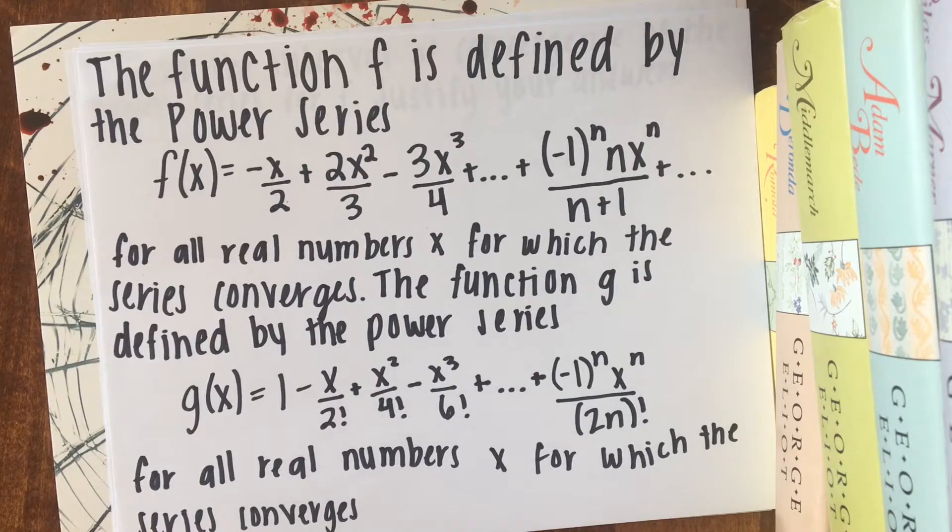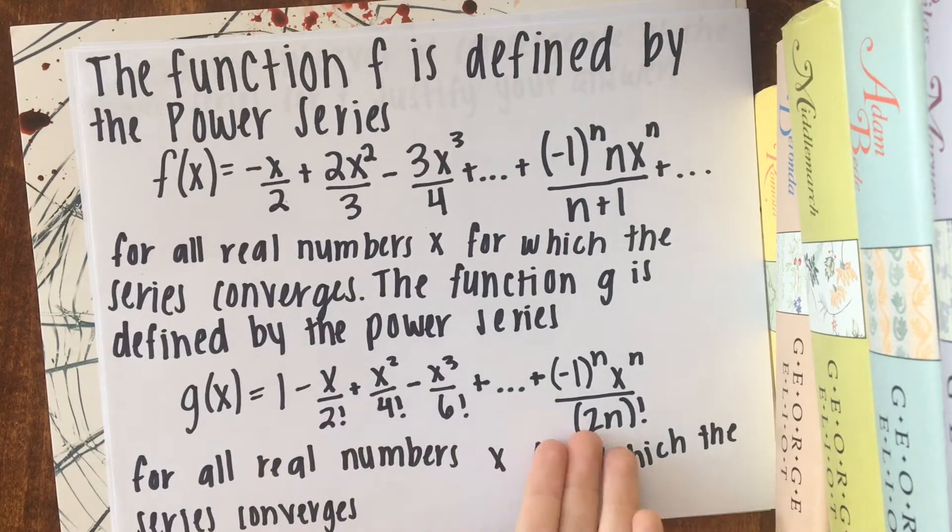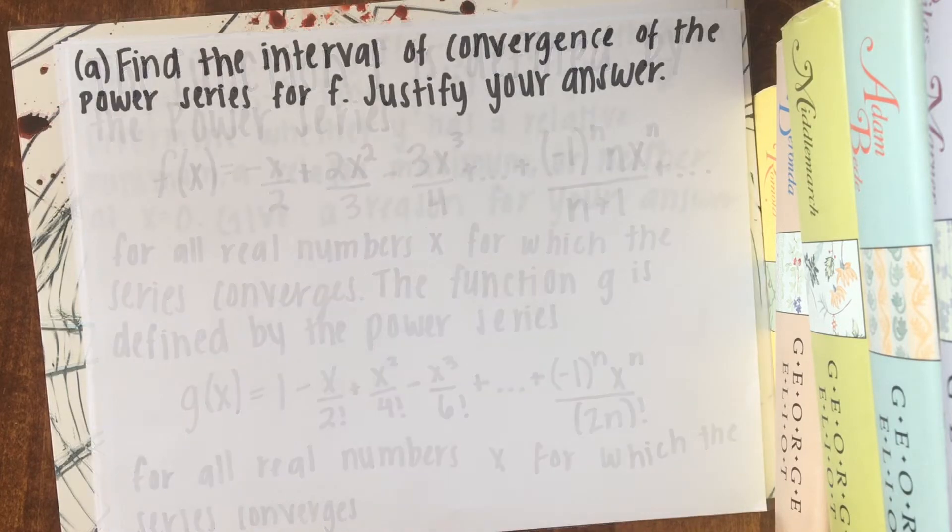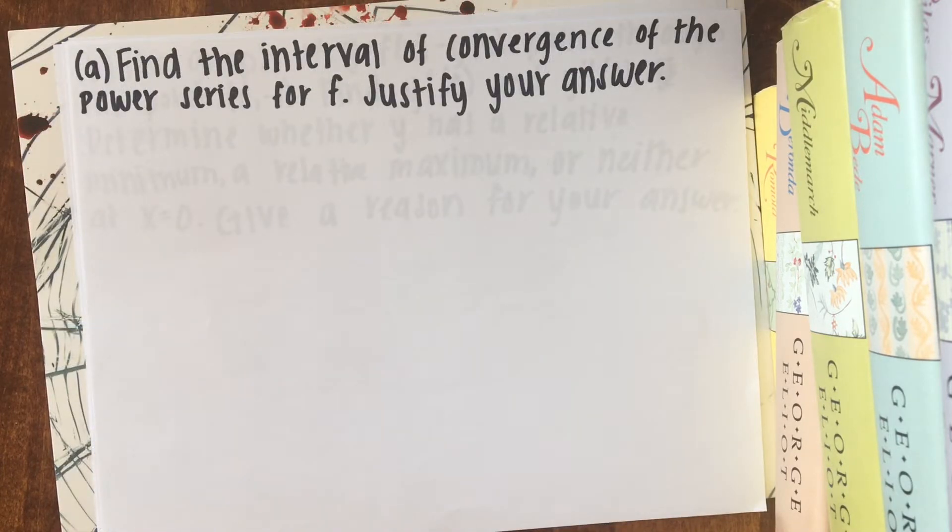The function g is defined by the power series, as seen here, for all real numbers x for which the series converges. So for part a, the first thing they want us to do is to find the interval of convergence of the power series for f and to justify our answer.